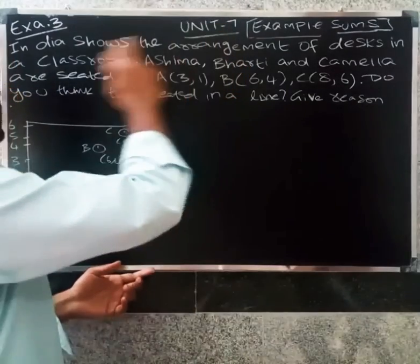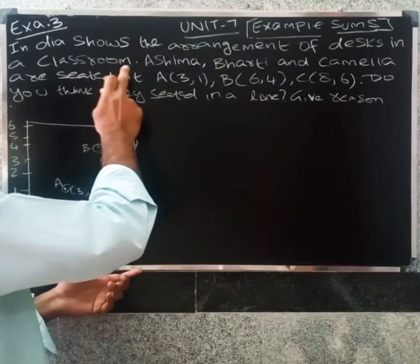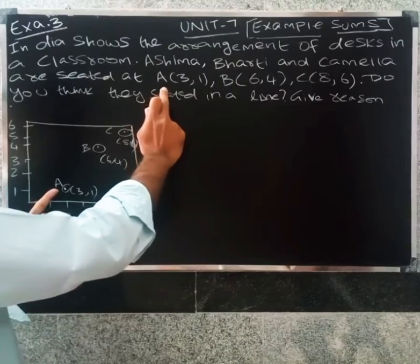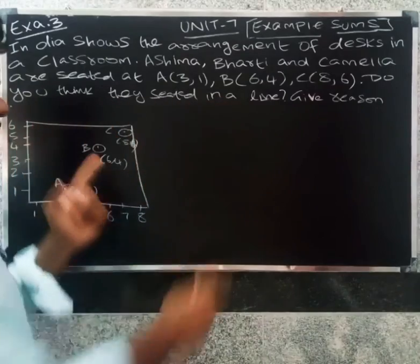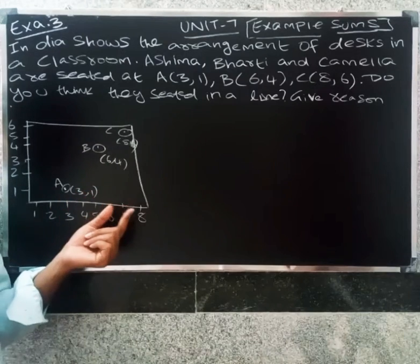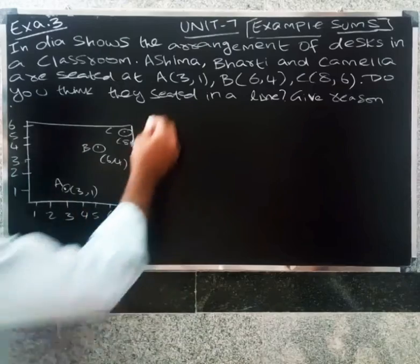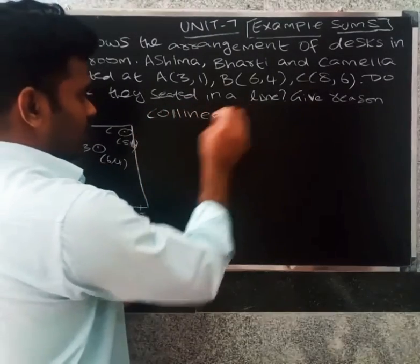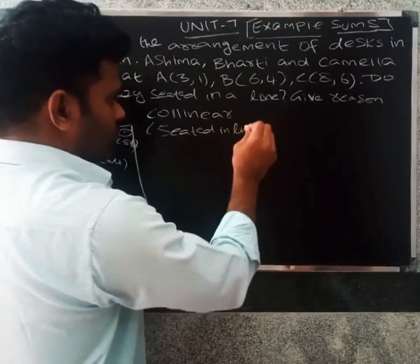Welcome friends. In this example, the diagram shows the arrangement of students in a classroom. Ashima, Barthi, and Camilla are seated at A(3,1), B(6,4), and C(8,6). Do you think they are seated in a line? The question is whether the points are collinear or not. So, collinear means they are seated in a line.